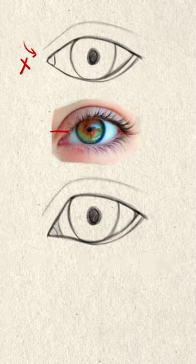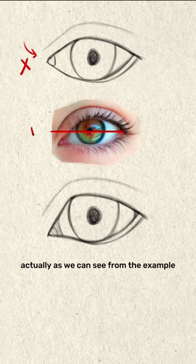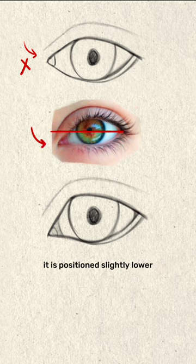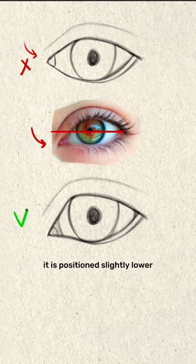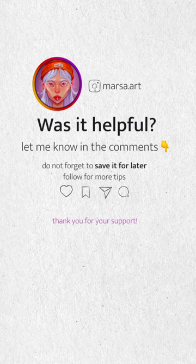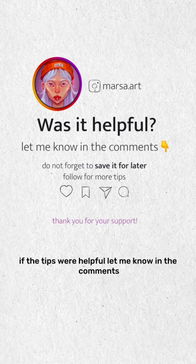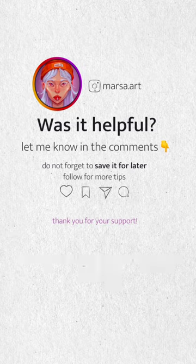Fifth, the tear duct — it's actually in the middle of the eye side, but as we can see from the example, its position is slightly lower. If the tips were helpful, let me know in the comments.